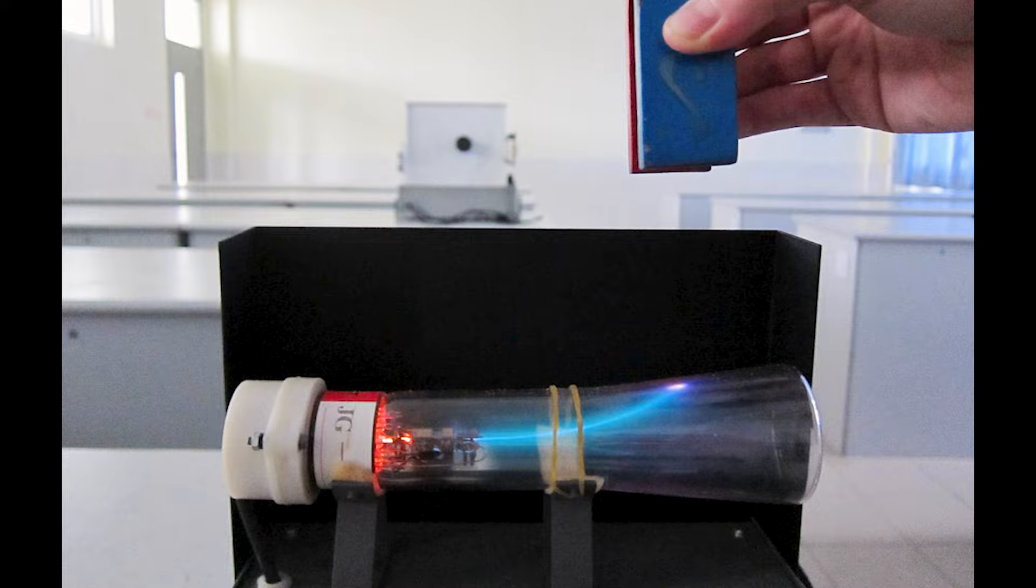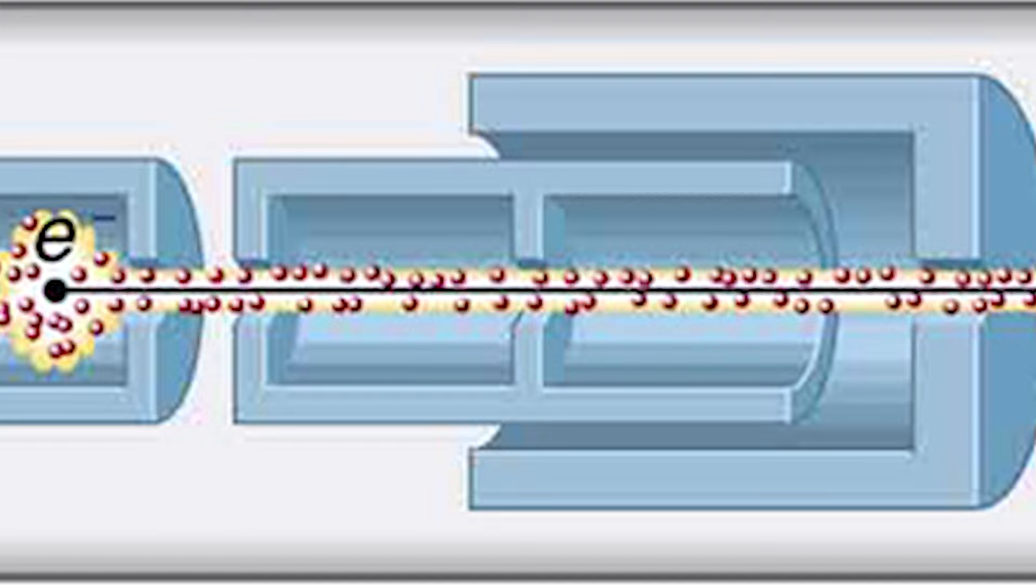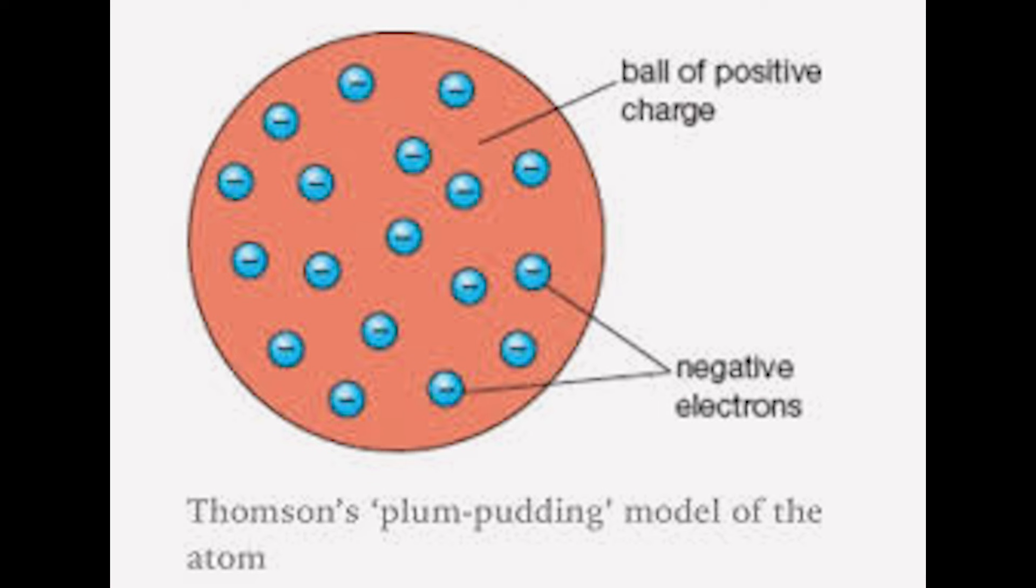Thomson found these rays were streams of particles, each carrying a negative charge. These electrons were much tinier than atoms, hinting at a universe within the atom. This revelation reshaped our atomic understanding. If atoms housed these tiny electrons, what else lay within? Thomson proposed a plum pudding model, likening atoms to positive spheres studded with electron plums.